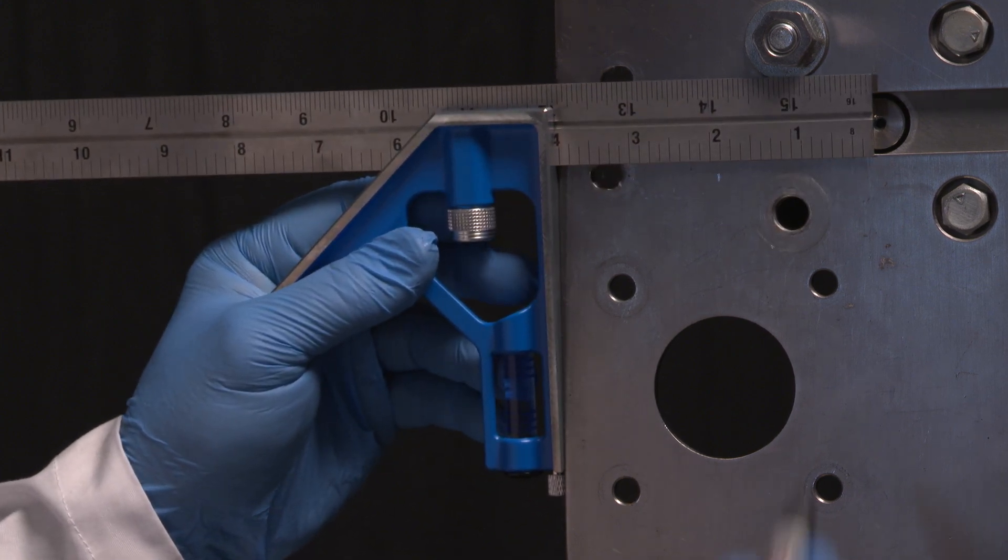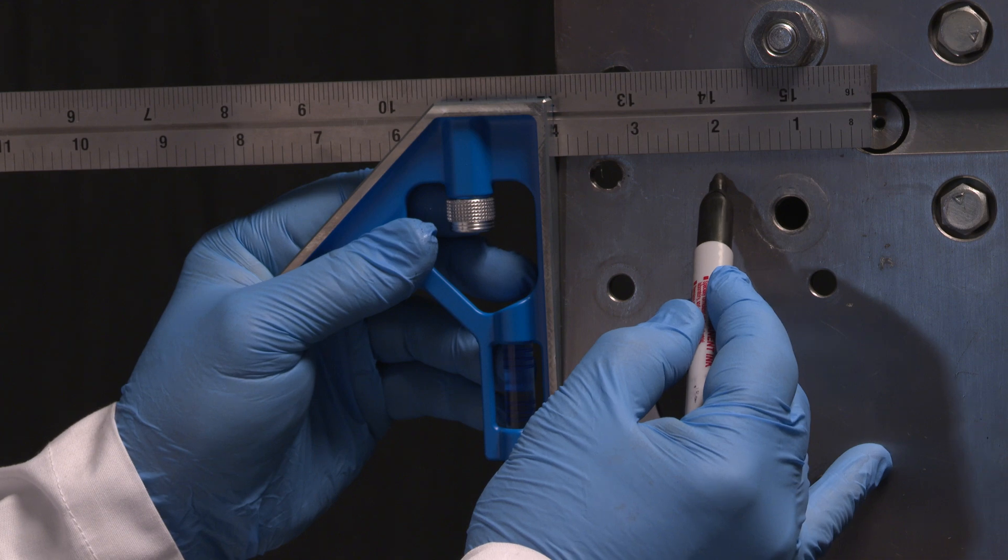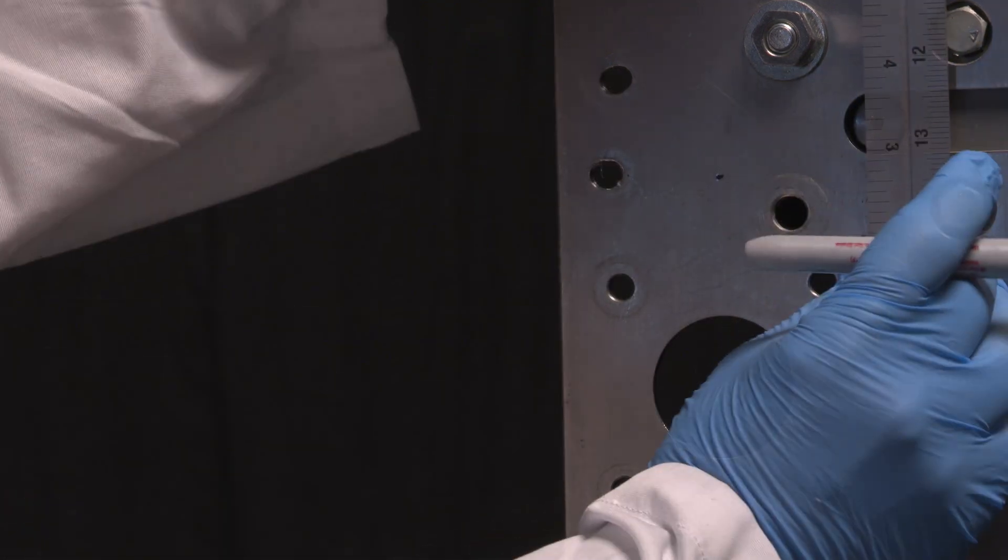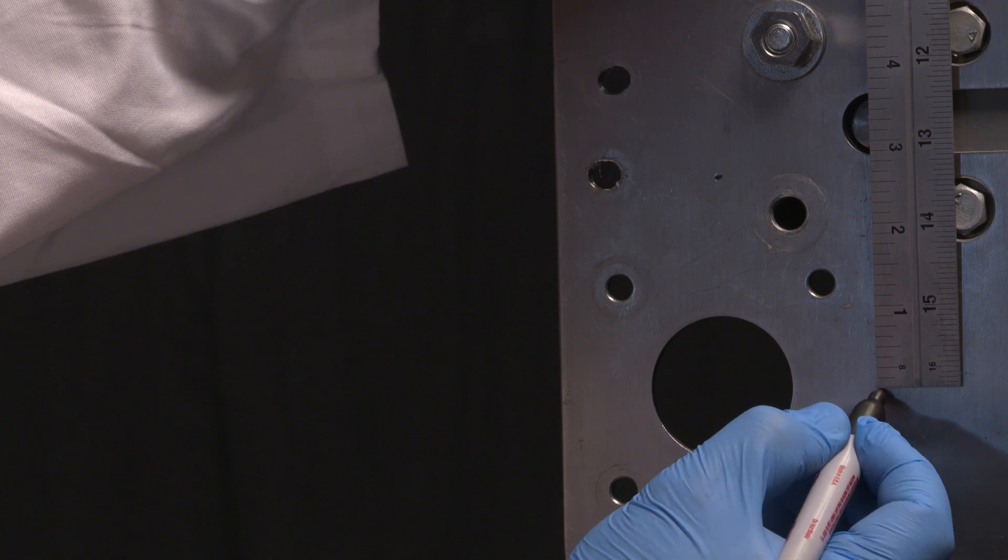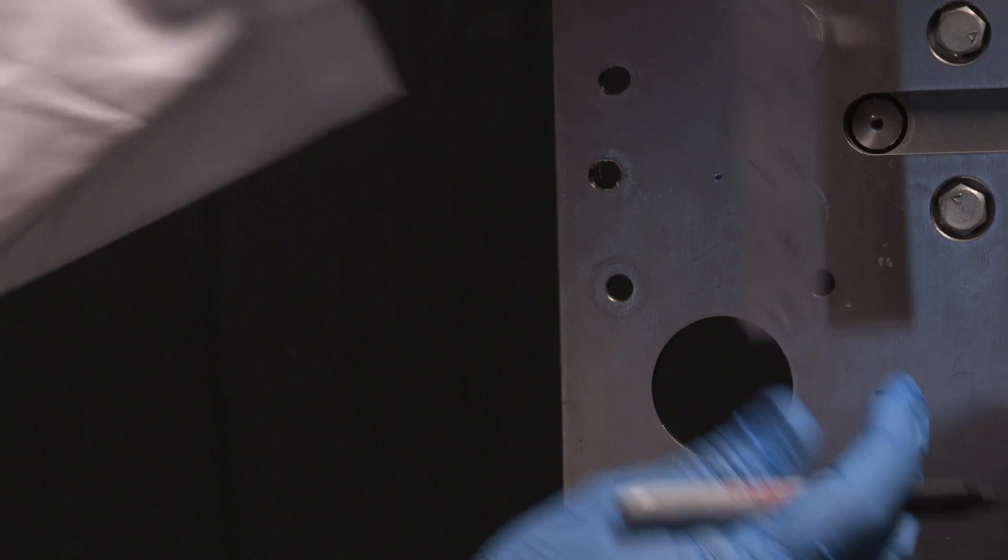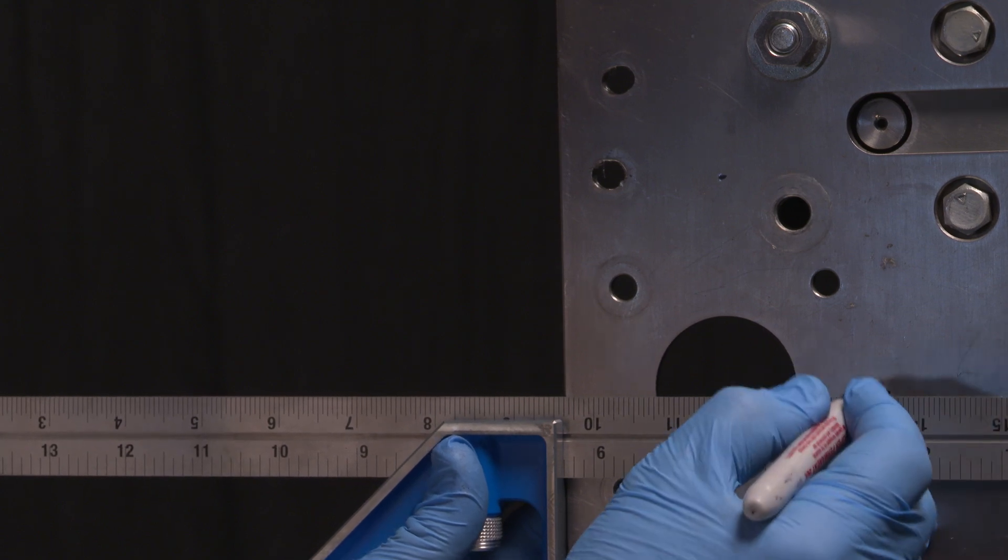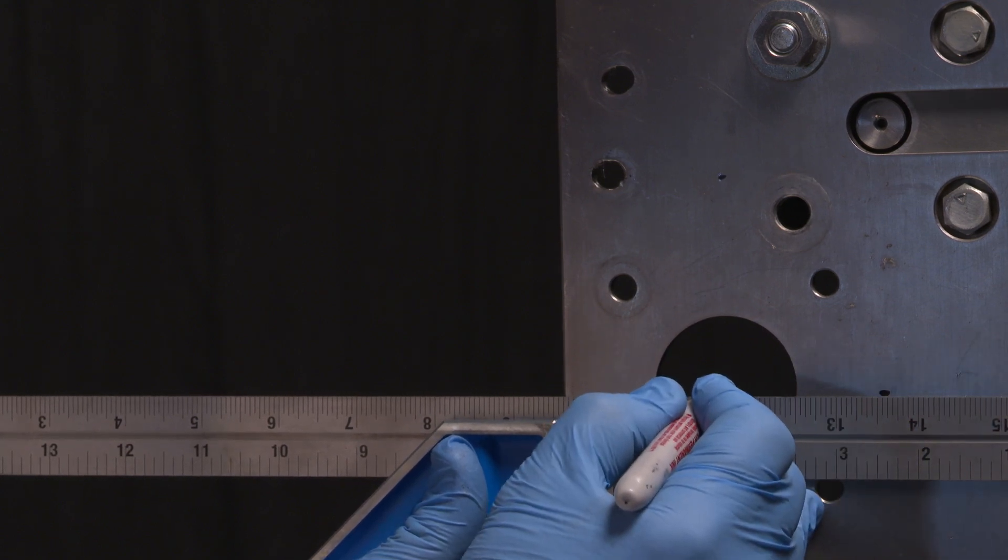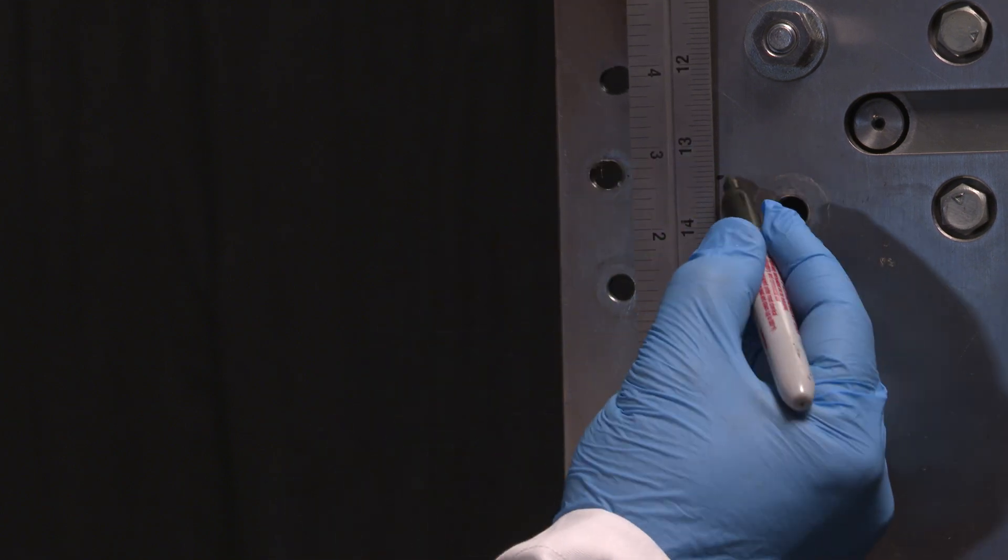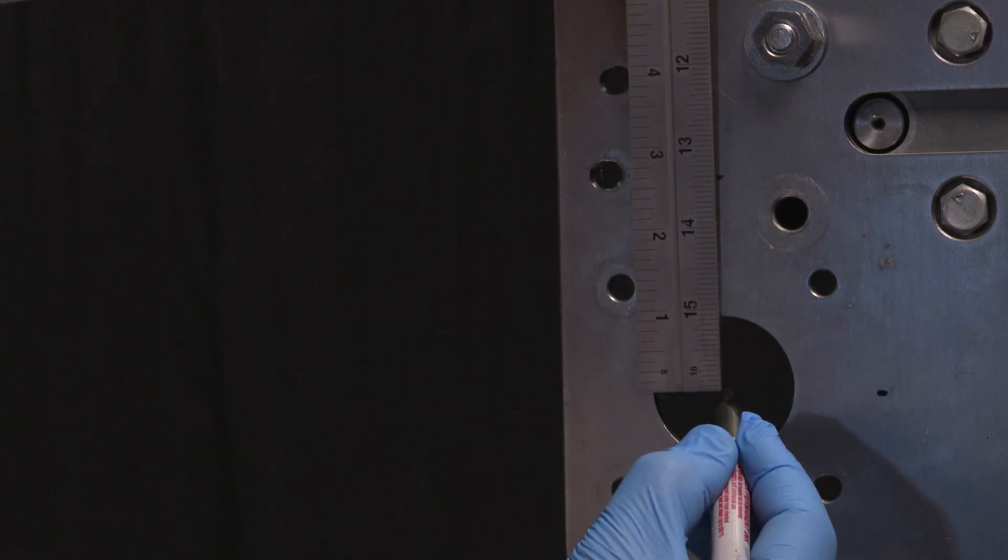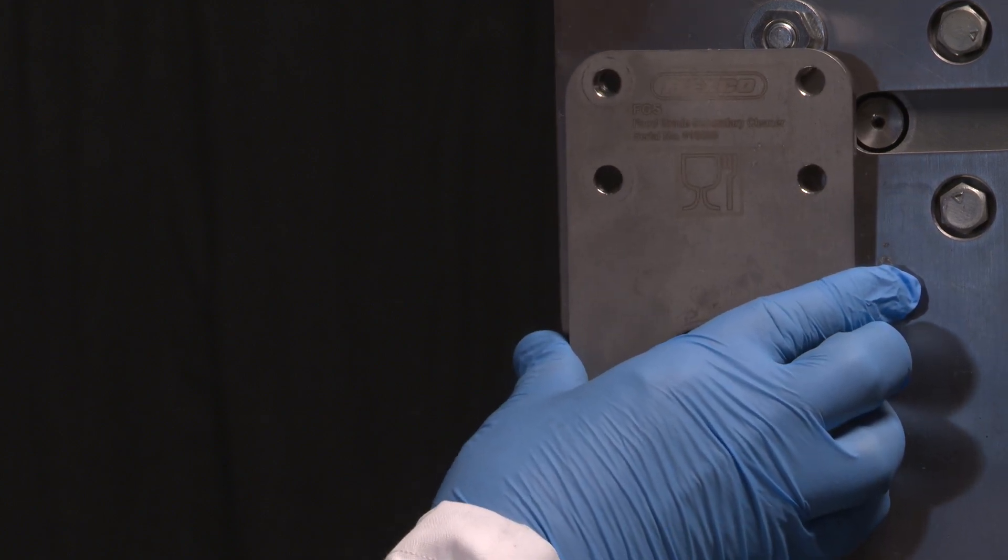Determine the shaft location using the X and Y dimensions from the installation manual. Cut a hole for the shaft. Mark the mounting holes using the side plate.